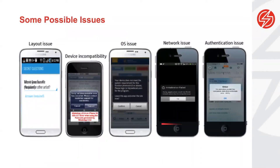We need to think about how to test hardware compatibility, network connectivity, and different operating system flavors. The same Android version can actually behave differently on a Samsung device versus an HTC device because they throw different skins on it. Apple, for example, makes testing and automation extremely difficult for those who want to interact with it externally, while Android makes it much easier. We can have layout issues, device incompatibility, operating system issues, network issues, and authentication issues — so many types of issues we don't typically encounter on web, because web is more mature.